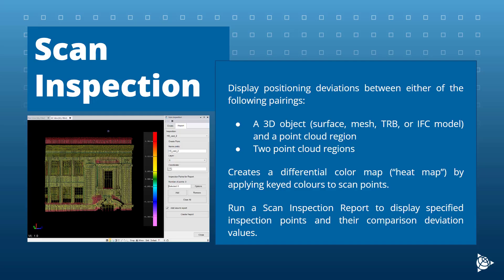The new Scan Inspection feature enables you to display positioning deviations between a 3D object such as a surface, a mesh, a TRB or an IFC model and a point cloud region, or two point cloud regions. This command creates a differential color map — in other words, a heat map — that graphically displays the positional deviations between the two selected objects in a variety of formats by applying heat colors to the scan points.